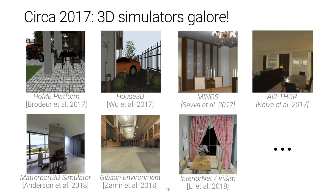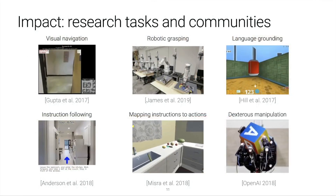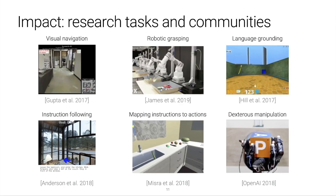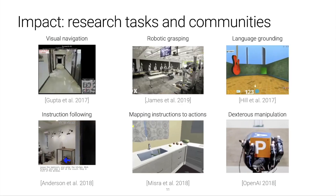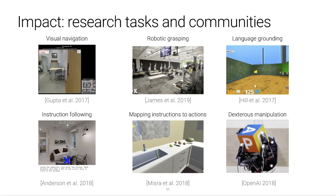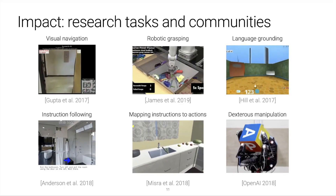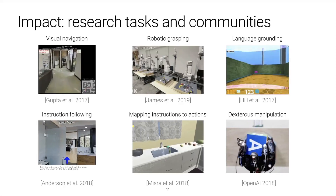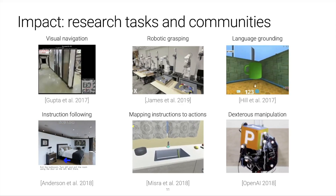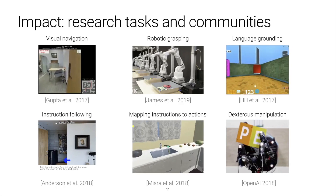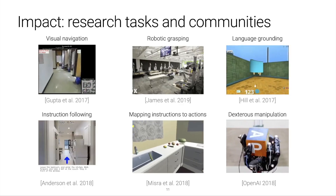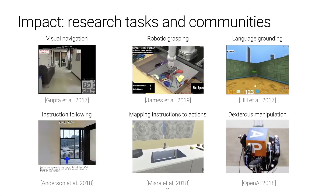There were many efforts using synthetic 3D environments or reconstructions of real spaces, and these efforts were associated with quite a few highly impactful research problems. In the top left we have visual navigation of an agent from one point in an interior to another, simulation for improving robotic grasping of objects, simulations for investigating how agents can learn to ground natural language statements or follow instructions in an interior, to map instructions to complete actions and objects, and finally in the bottom right to dexterously manipulate objects. So this was a variety of different tasks that were in part enabled by simulation.